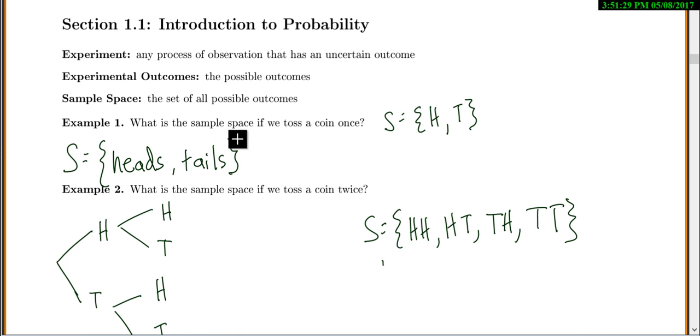For example, what would be the sample space if we toss a coin once? If I toss a coin once, I can either get heads or tails. We'll abbreviate this with just an H and a T. To write this sample space, we'll always write S equals, and then we do curly brackets with the possible outcomes inside.